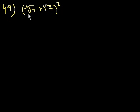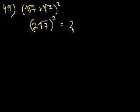So this is really just a little bit of simplification. If I have 2 of something, in this case I have 2 square roots of 7, if I add them together, I get 2 of it. So I get 2 square roots of 7, and I'm squaring that. And 2 square roots of 7 squared, that's equal to 2 squared times the square root of 7 squared.